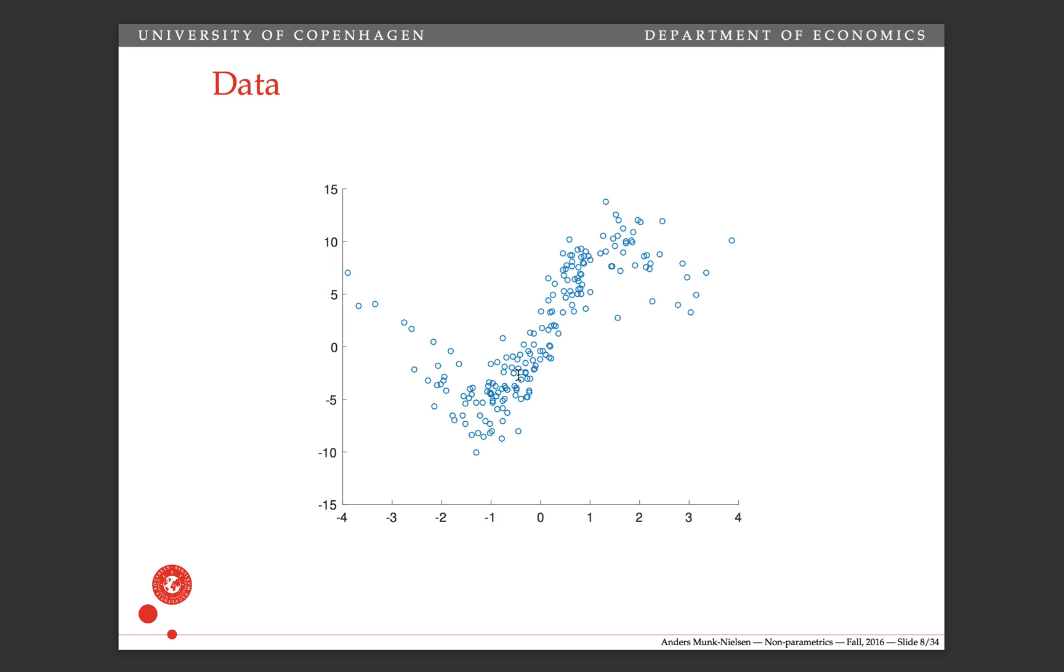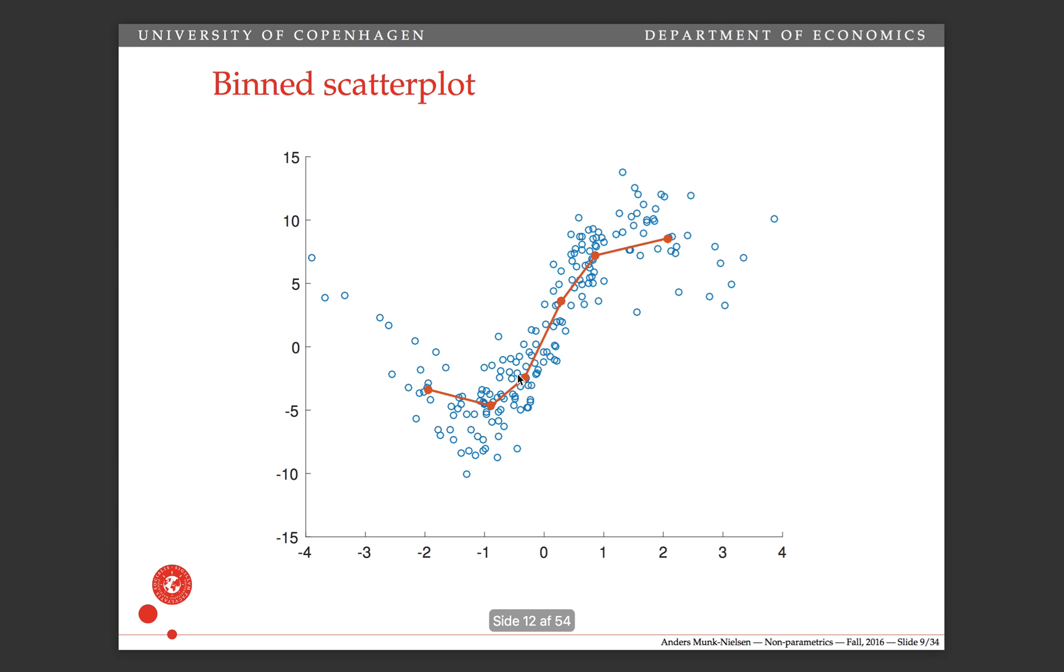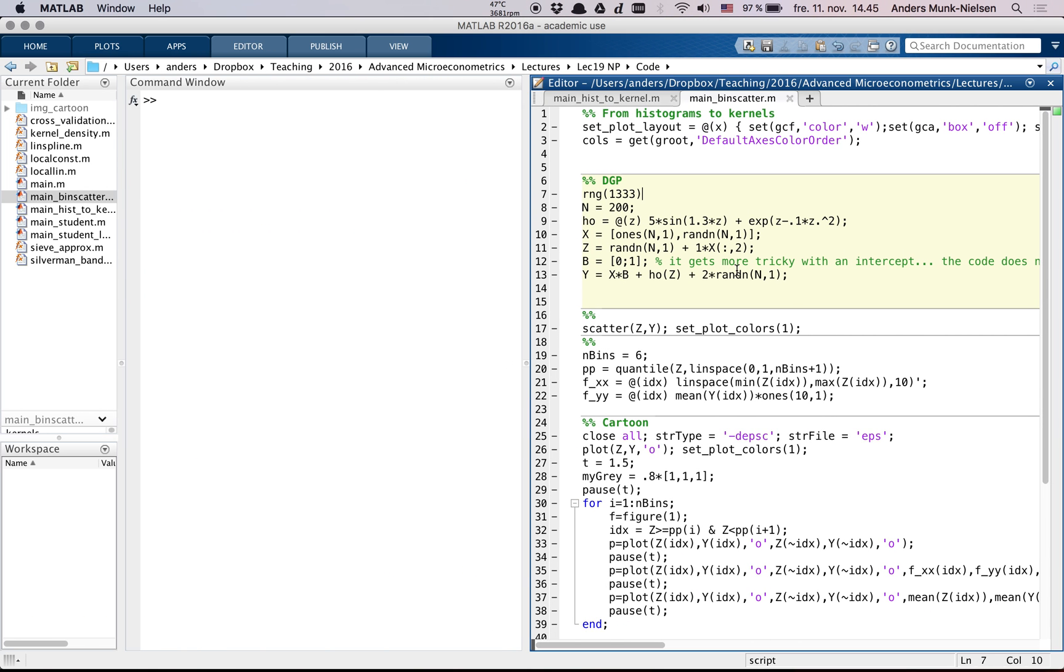You can see there's some noise around this true relationship. So whereas in density estimation we all know about histograms, there's an alternative simple-to-understand tool here called a binned scatter plot, which is kind of an equivalent of the histogram. It just averages within bins of x, so within chunks of x.